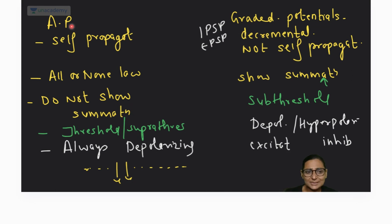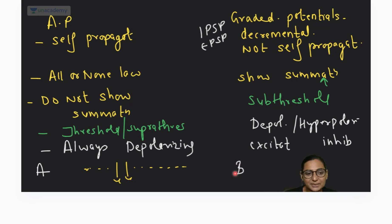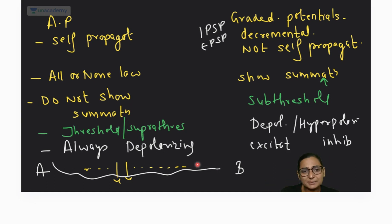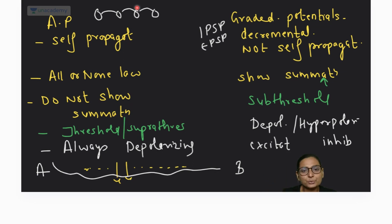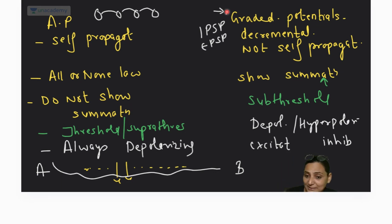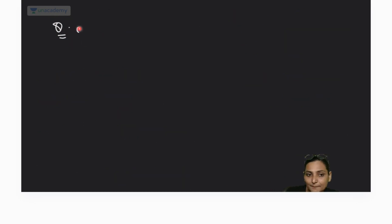Action potentials are used to carry information over long distances, while graded potentials are used to transfer information between neighboring cells over short distances. Action potentials are active phenomena requiring energy, so graded potentials are preferred where the distance is short.